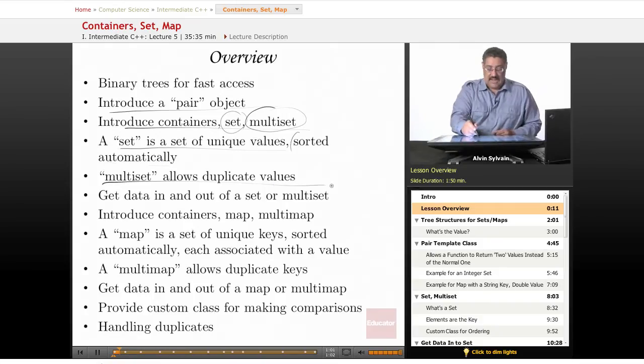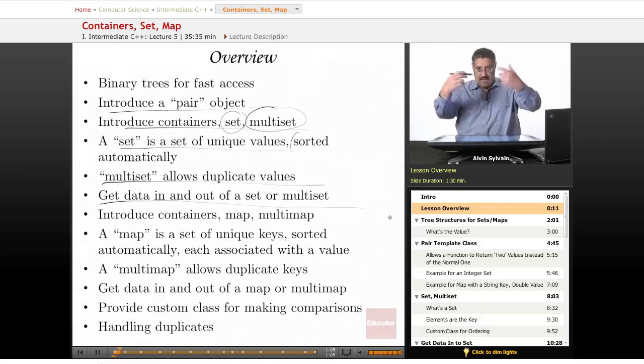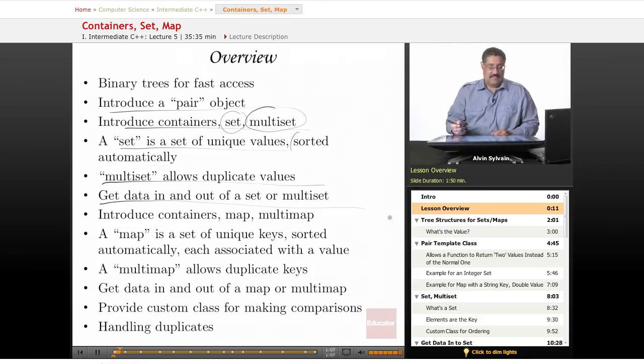We'll talk about how to get data in and out of a set or multiset, and we'll also introduce map and multimap, the same type of thing where the map has unique keys and multimap has duplicate keys.